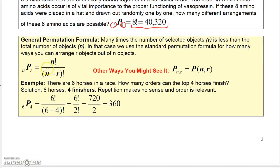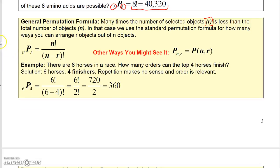Now, the general permutation formula is assuming that you're going to choose a number less than n. r is less than n. In that case, you would use the standard formula. The standard formula for permutations, to calculate it by hand, would be nPr would be n factorial over n minus r factorial.